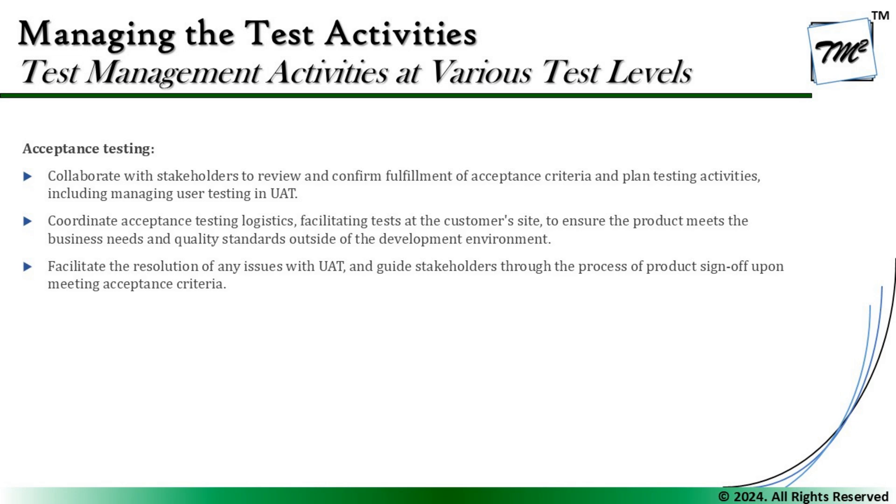Finally, the test manager should facilitate the resolution of any issues found during UAT, and guide stakeholders through the process of product sign-off upon meeting the acceptance criteria. Acceptance testing may still find defects — help get those facilitated and resolved, and help achieve the required sign-off. The criteria can be mutually agreed upon: number of open defects, known defects not being fixed now but addressed later — all should be agreed together, and once sign-off is obtained, we know the process is complete.